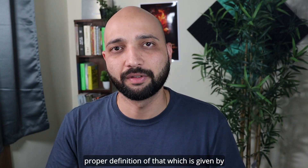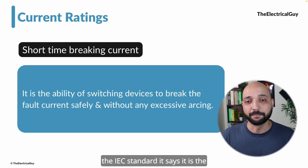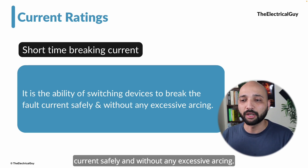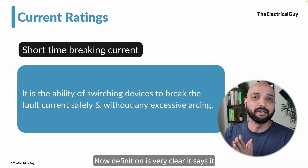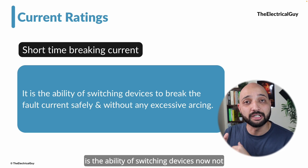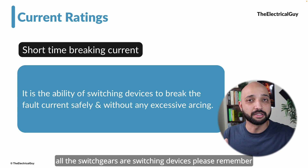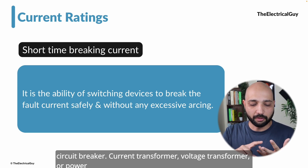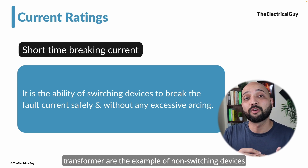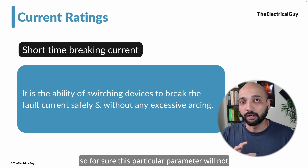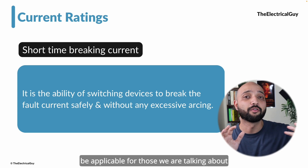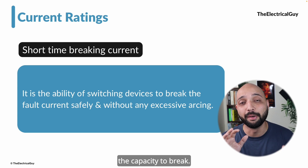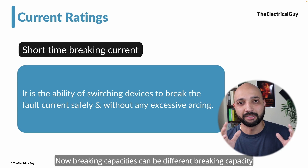Looking at the proper IEC standard definition: it says it is the ability of switching devices to break the fault current safely and without any excessive arcing. The definition is very clear — it says switching devices. Not all switchgear are switching devices. A circuit breaker is an example of a switching device, while a current transformer, voltage transformer, or power transformer are examples of non-switching devices. So this parameter will not be applicable for those.